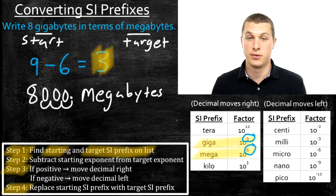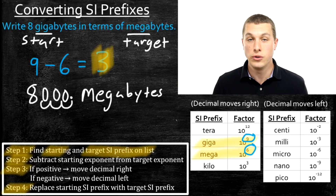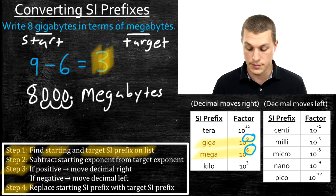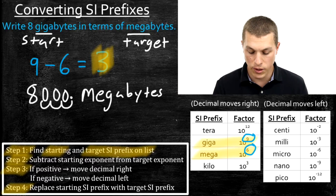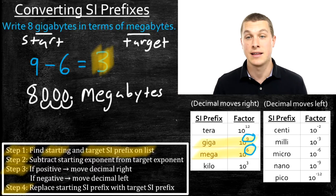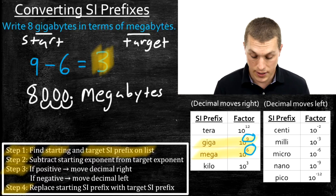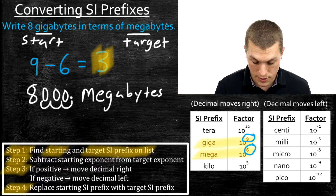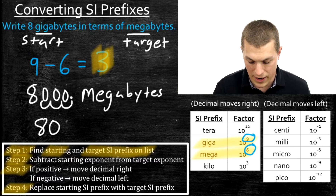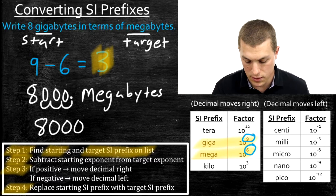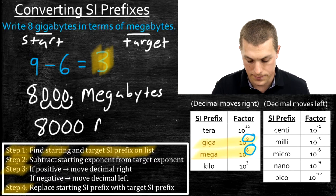We can go between any two numbers and SI prefixes using those same steps. We might want to write that 8,000 megabytes cleaned up — just 8,000 megabytes.